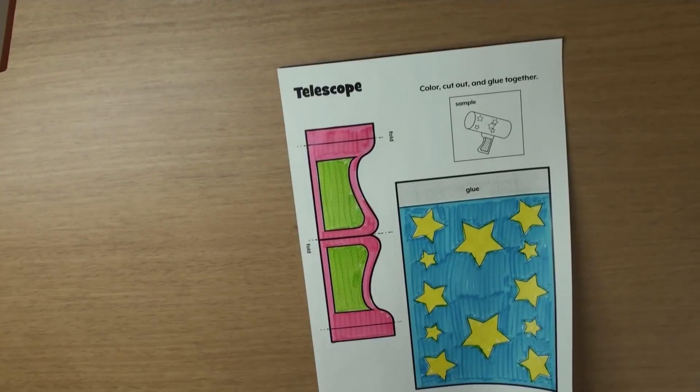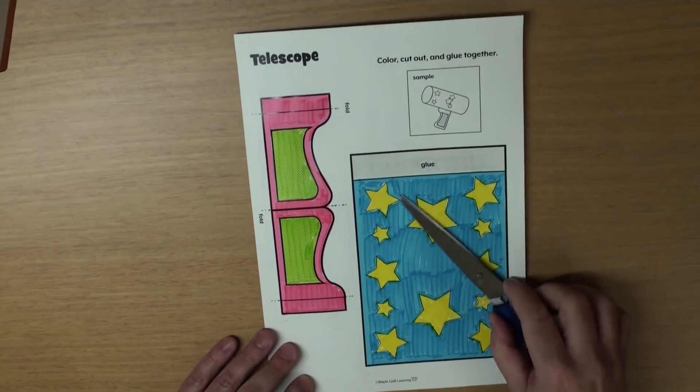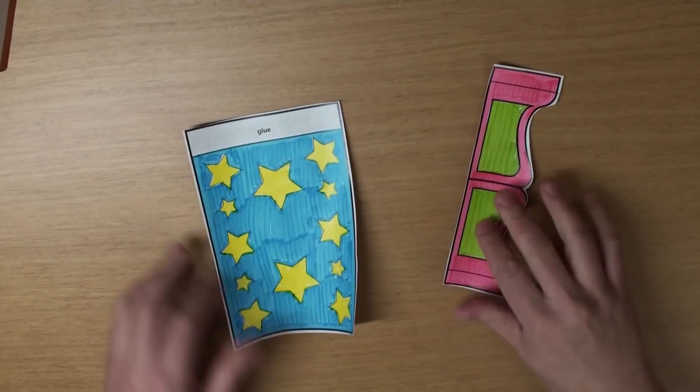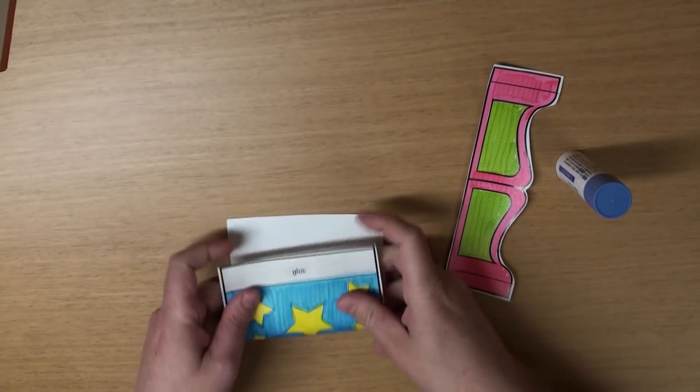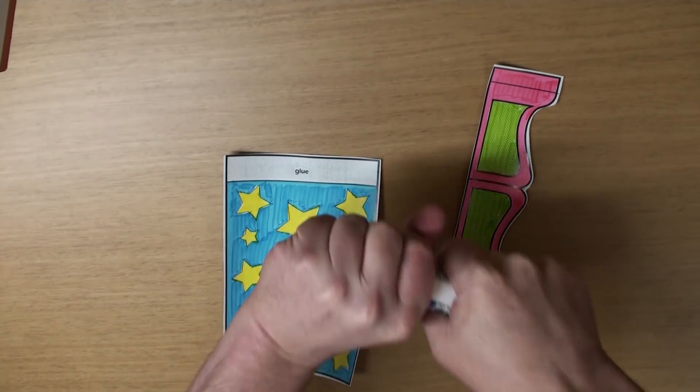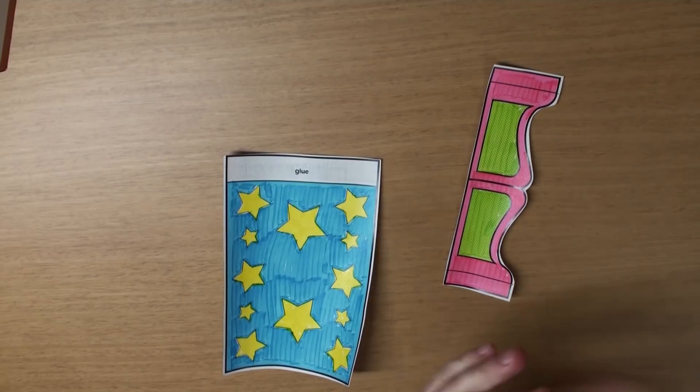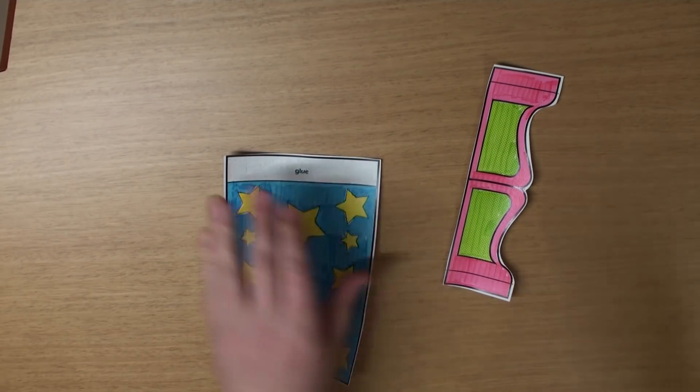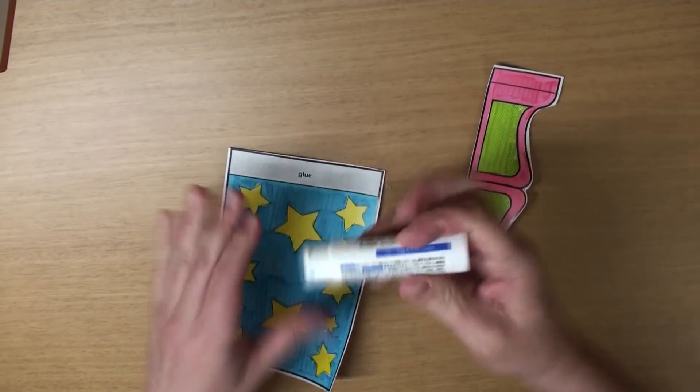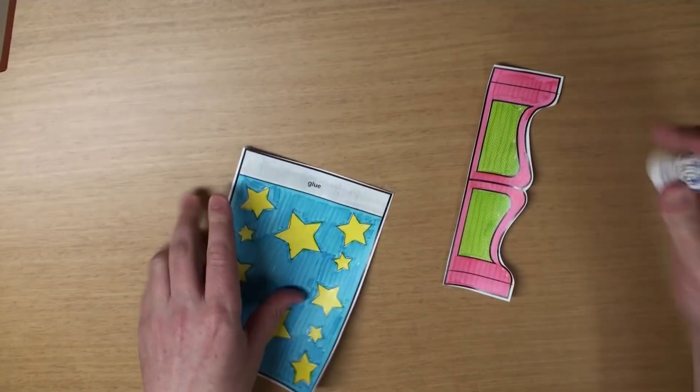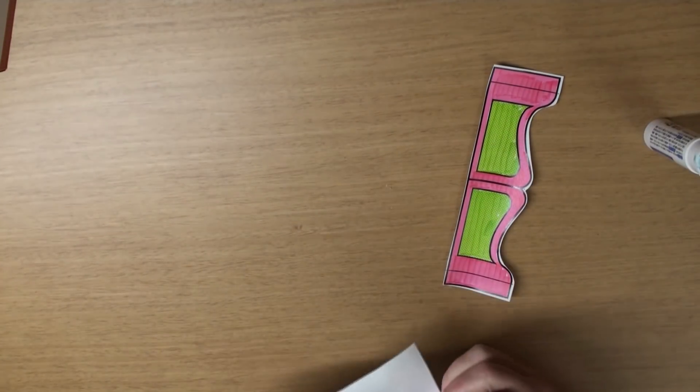Great! And grab your scissors and let's cut it out. Wow! Now, get some glue. And we're going to put some glue on the edge like this, okay? Put some glue on like that.